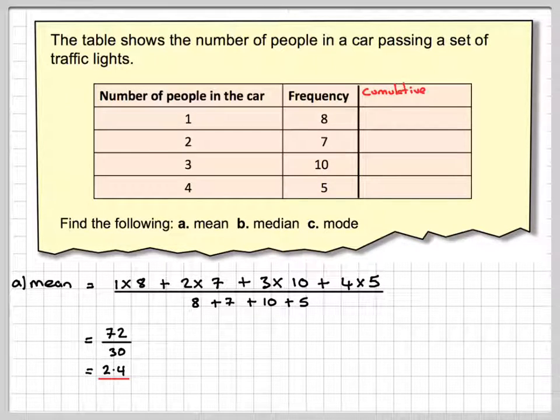Right, the median is I need to put them all in order of size and find the middle values, remembering there are 30 values altogether. So to do that, I'm going to add up the frequencies. We're going to call this cumulative frequencies.